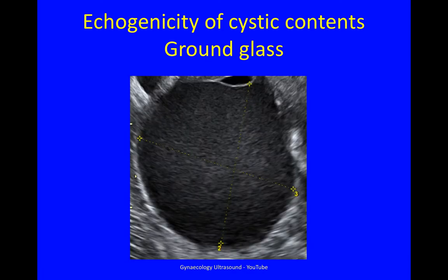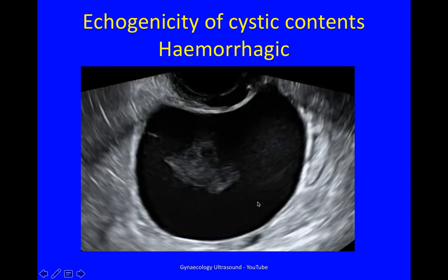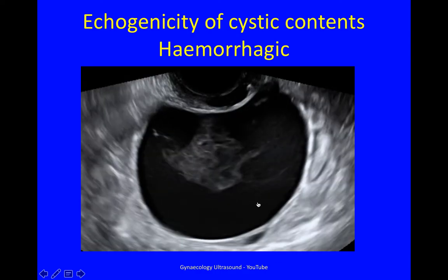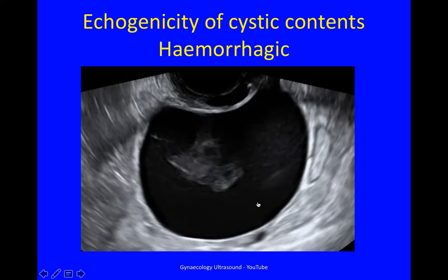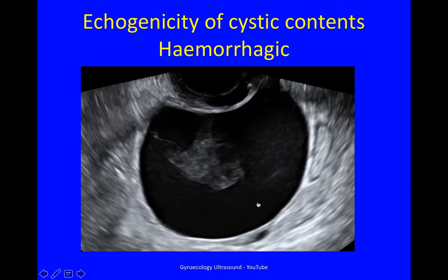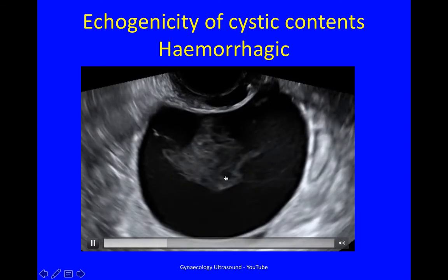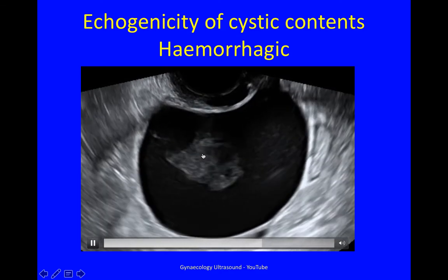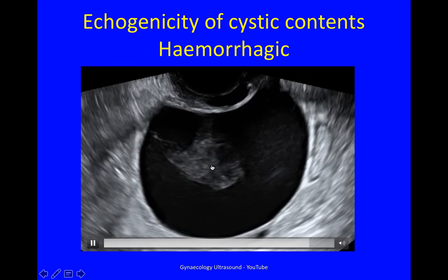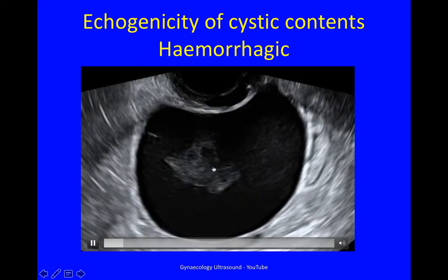In this cyst there is ground-glass echogenicity. The echogenicity is a bit thicker. This cyst has hemorrhagic cyst contents. You can see that on moving the probe, this little bit of clot here wobbles like jelly on a plate.